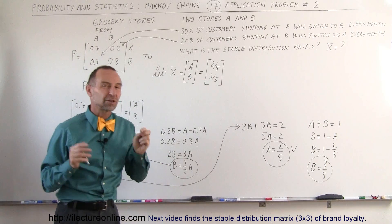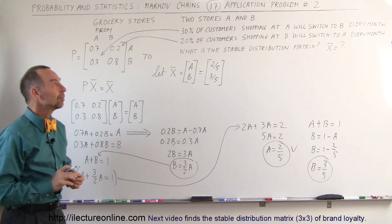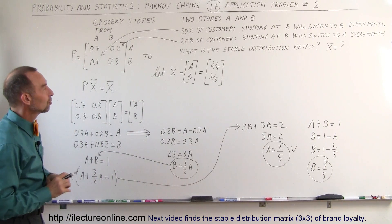80% of the customers at B remain at B. There's more customers remaining at B than at A, so you expect a larger percentage of the customers eventually shopping at B versus A. That looks like a reasonable stable distribution matrix.